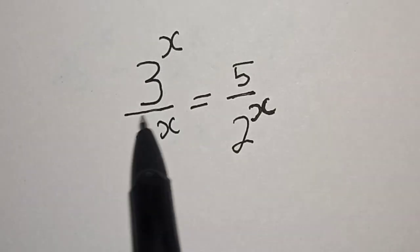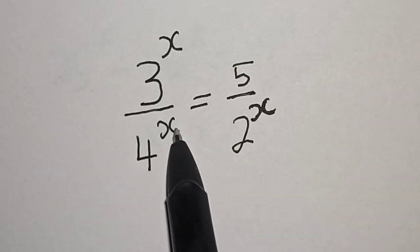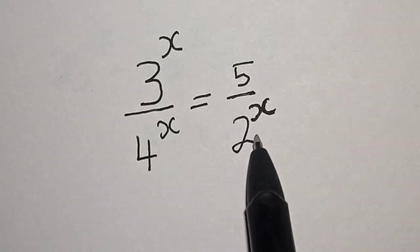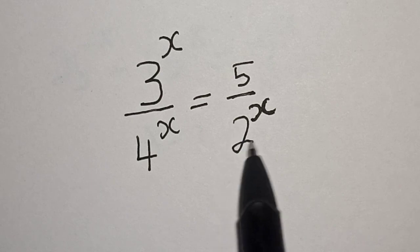3 raised to power x divided by 4 raised to power x is equal to 5 divided by 2 raised to power x.